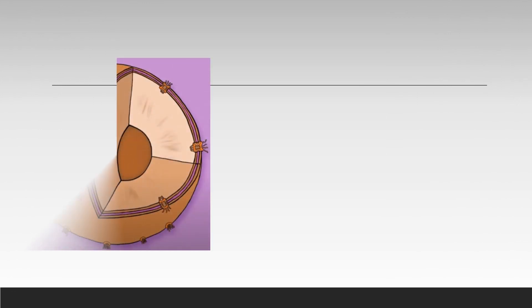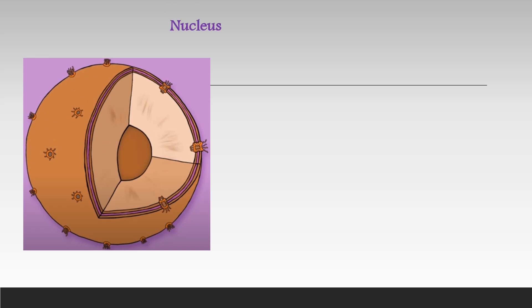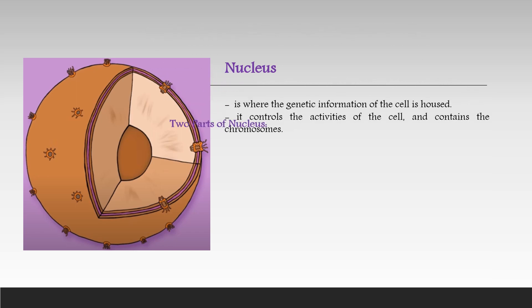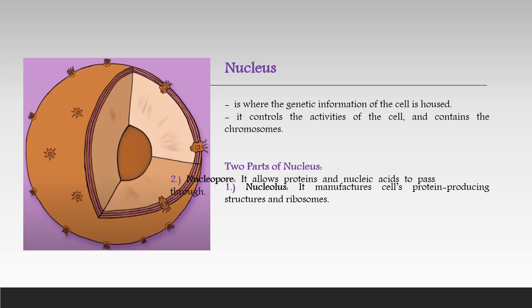Let's go to the parts and function of plant and animal cells. To begin with, the nucleus is where the genetic information of the cell is housed. It controls the activities of the cell and contains the chromosomes. There are two parts of the nucleus. The nucleolus manufactures the cell's protein-producing structures and ribosomes. The nucleopore allows proteins and nucleic acids to pass through.